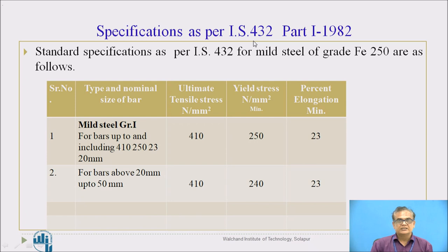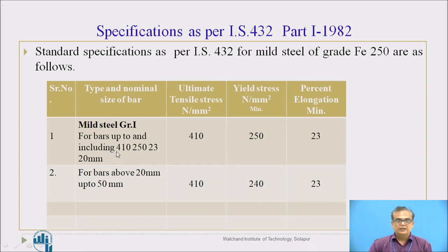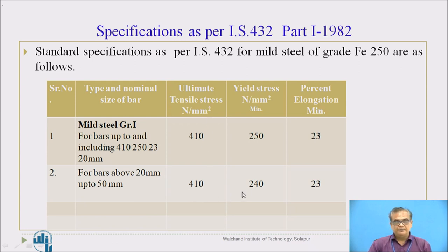There are certain specifications given by IS 432, Part 1, 1982 regarding ultimate stress, yield stress, and percent elongation for mild steel of Grade 1. For bars less than 20 mm: minimum ultimate tensile stress should be 410 N/mm², minimum yield stress should be 250 N/mm², and minimum percent elongation should be 23%. For bars more than 20 mm up to 50 mm: minimum ultimate tensile stress is 410 N/mm², minimum yield stress is 240 N/mm², and minimum percent elongation is 23%.